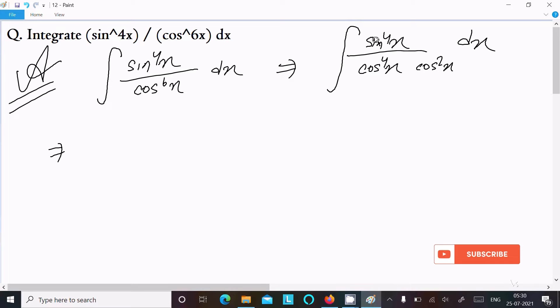So here this is integration sin⁴x divided by cos⁴x. It's equal to tan⁴x. And here 1 by cos²x that is equal to sec²x dx.